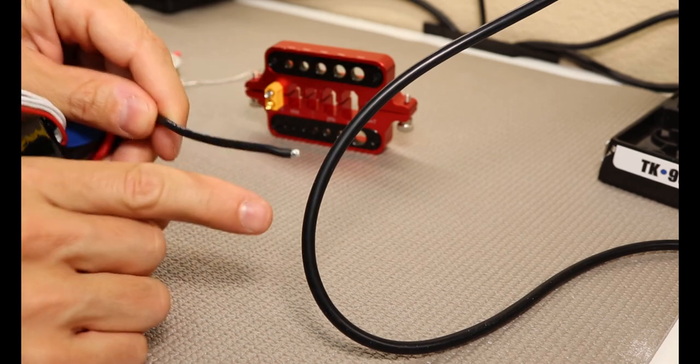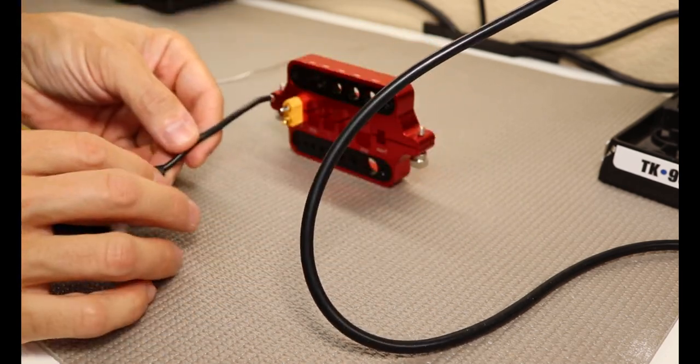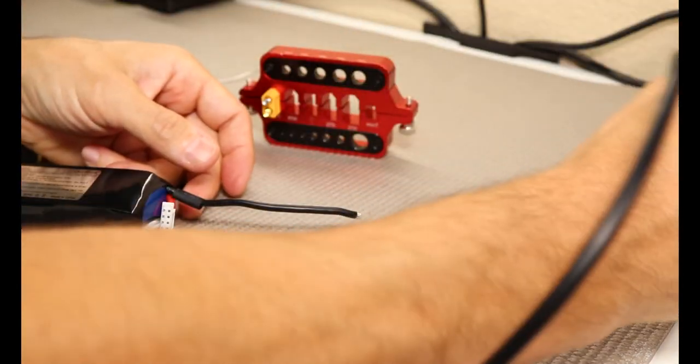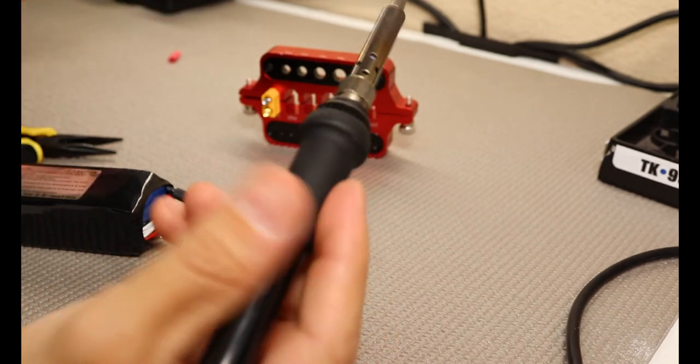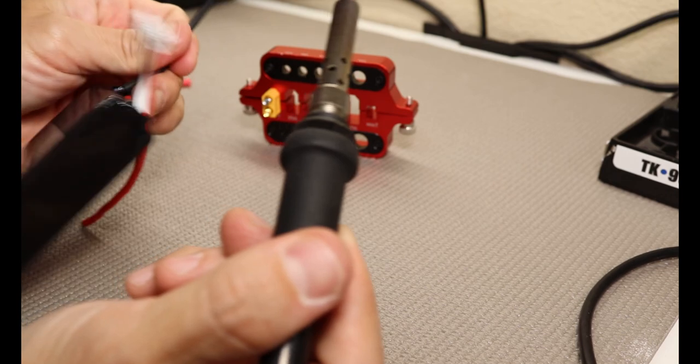So now we have a tin connector, we have a tin wire, and all we need to do now, see if I can keep this in line of sight, the camera for you guys. Again, we're going to clean our iron, we're going to tin it.